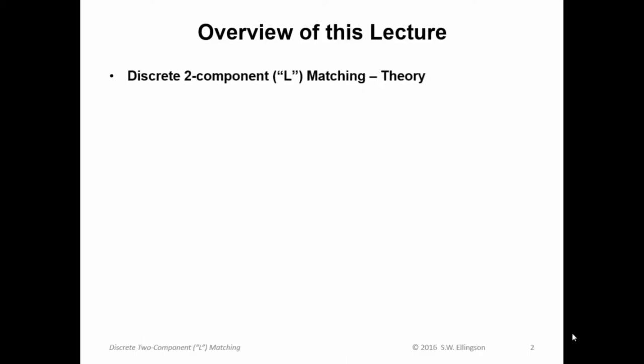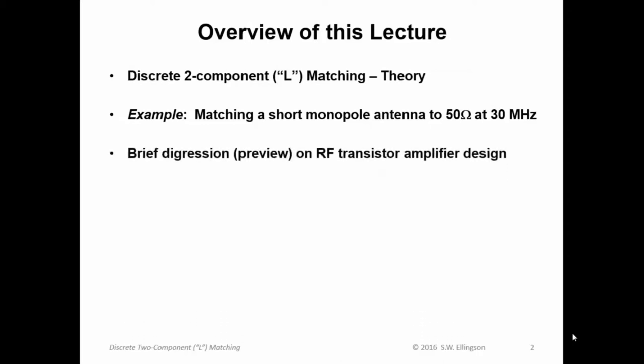First, I'll introduce you to the theory of discrete two-component L type matching. We'll do an example where we use this theory to match a short monopole antenna to 50 ohms at a frequency of 30 megahertz. It's a very typical kind of example and a realistic one. Then we'll have a brief digression and really a preview on RF transistor amplifier design. You have probably seen in a previous lecture where we talk about designing amplifiers by selectively mismatching the input and output ports of the two ports representing the transistor.